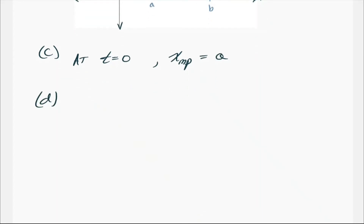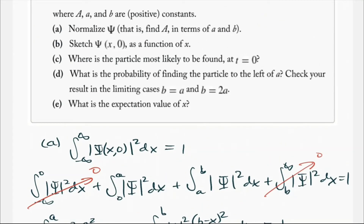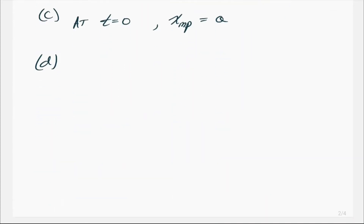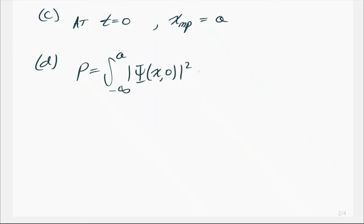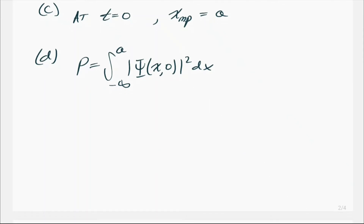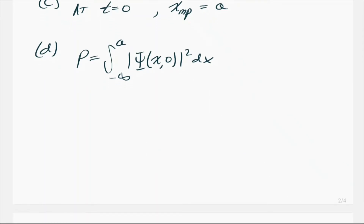Part D asks for the probability that the particle is found to the left of a, and then we check that result in two limiting cases: case one, b equals a, and case two, b equals 2a. The probability is the integral from negative infinity to a of psi(x, 0) squared dx. We split this into two integrals: from negative infinity to 0, and from 0 to a. When we integrate psi squared, it gives the probability.